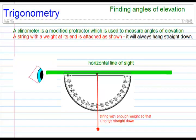You can take a protractor, turn it upside down, and hang a string from its middle. The string should have a heavy weight on the end so that the string is always hanging straight down.